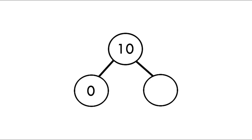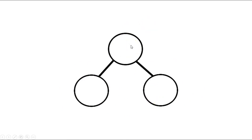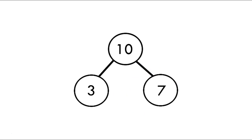Go ahead and solve this next one on your own. Is this how your number bond looks? If it is, give yourself a kiss on the brain — excellent job! 10 is our whole number, we have 0 over here, so we need 10 more to make 10. Let's do one more — go ahead and fill this in. What is our missing part? Did you say 7? Excellent job.